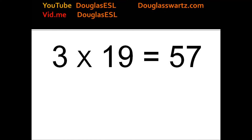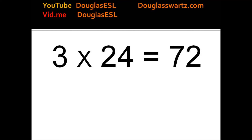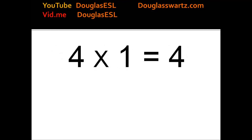3 times 19 equals 57. 3 times 20 equals 60. 3 times 21 equals 63. 3 times 22 equals 66. 3 times 23 equals 69. 3 times 24 equals 72. 3 times 25 equals 75. 4 times 1 equals 4.